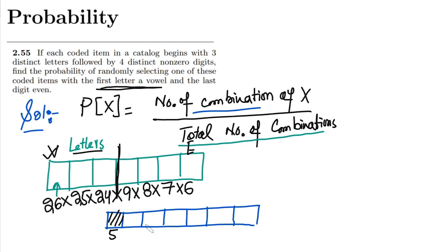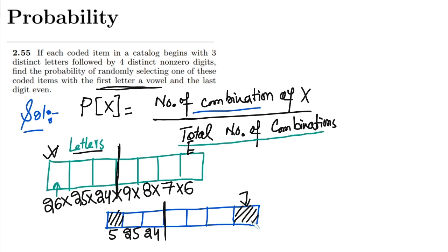So I will have 5 choices for the first position. When one of the 5 choices is occupied, I will have 25 left for the second letter, since one out of 26 is used. Similarly, when two letters have been placed, 24 will be left. For the digits, I concentrate on the last digit first, which has the condition of being even.